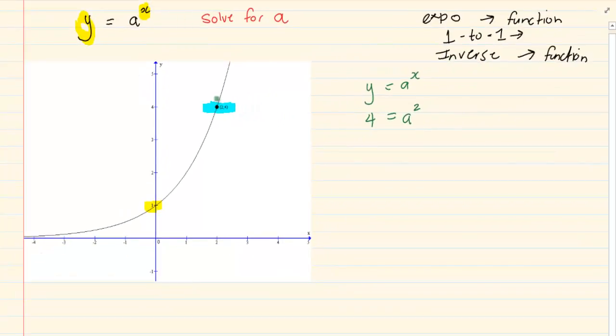Now using your exponential rules from grade 10 and grade 11, we know that 4 is equal to 2 to the power of 2, which is equal to a to the power of 2. Since both my powers are the same, I can cancel it, which will give me a is equal to 2. So the equation of this graph is y is equal to 2 to the power of x.